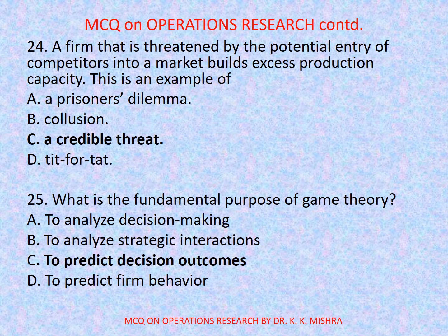Question number 24: A firm that is threatened by the potential entry of competitors into a market builds excess production capacity. This is an example of — options are: a) a prisoner's dilemma, b) collusion, c) a credible threat, d) tit-for-tat. Correct option is c) a credible threat.